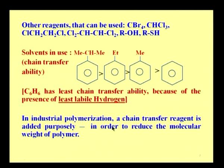In the industry, a chain transfer reagent is deliberately added for industrial polymerization in order to reduce the molecular weight of the polymer. This is important especially in the rubber industry, where you are concerned about the average molecular weight of different polymer chains. You want a polymer with chains of uniform molecular weight, and in certain polymers — especially rubber — you need to reduce the molecular weight. So a chain transfer reagent is deliberately added into the polymerization system to terminate or bring down the molecular weight of a growing polymer chain, resulting in low molecular weight product samples.